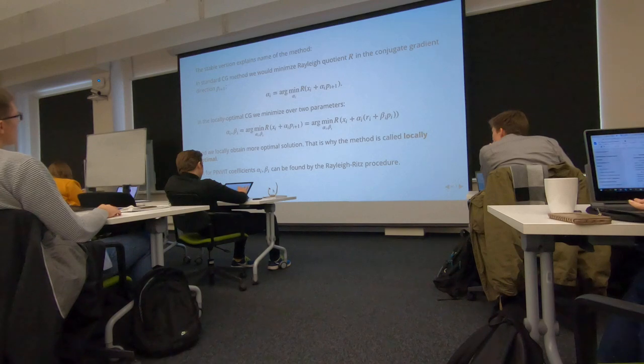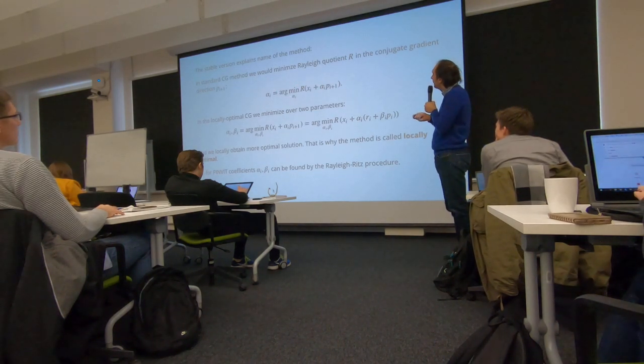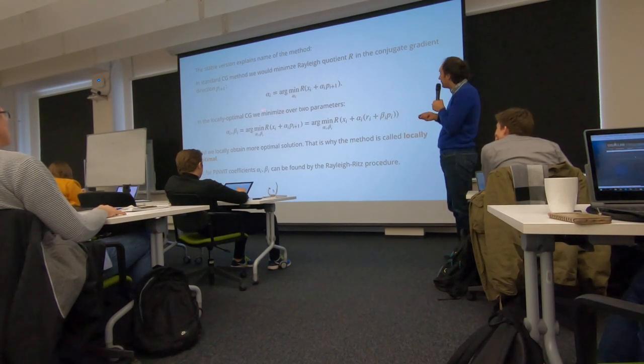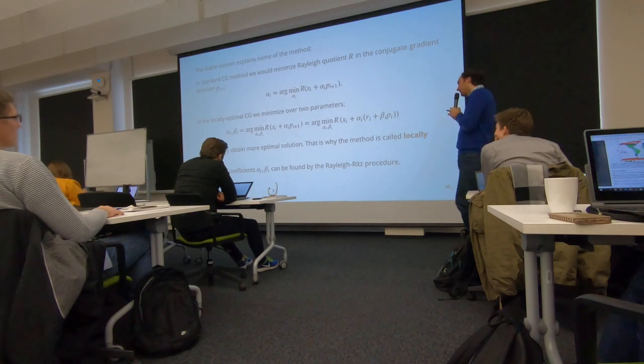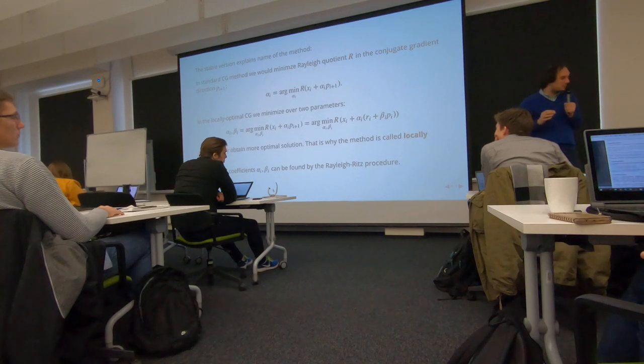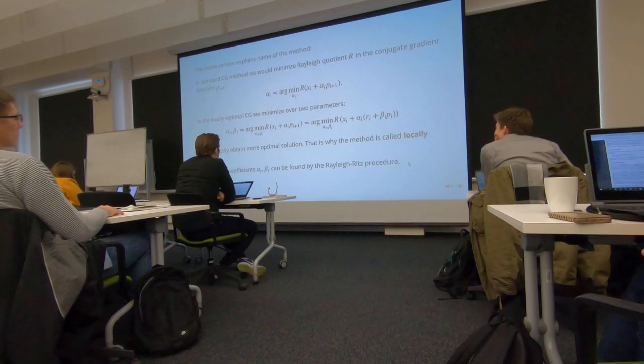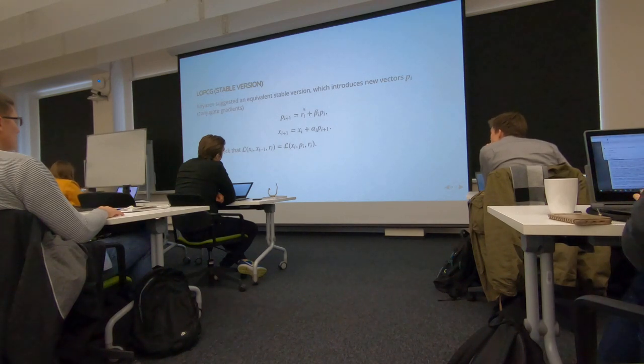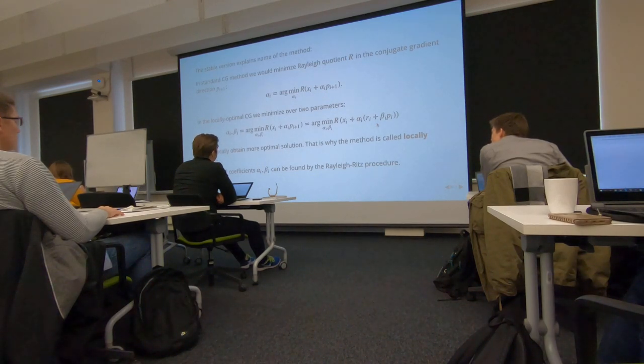In the standard conjugate direction method, you find the direction that minimizes the Rayleigh quotient. And this locally optimal conjugate gradient will optimize over two parameters. That's all. In some sense, it's sort of heuristic, but actually it works well. And you may say that I might come up with a better idea, but that's how it works. We have two directions here. See? See this problem? The next direction is a previous one plus the conjugate and the next X is previous one plus the conjugate. And you have it exactly here. The new direction is the previous residual plus the conjugate.